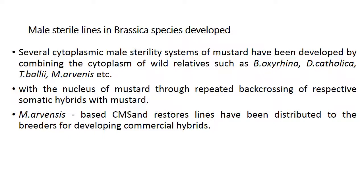Coming to male sterile lines in Brassica species: several cytoplasmic male sterility systems of mustard have been developed by combining the cytoplasm of wild relatives — Brassica oxyrrhina, Brassica catholica, Brassica balli, Brassica arvensis etc. The main sterility system is used for the production of hybrids in Brassica with a nucleus of mustard through repeated backcrossing of respective somatic hybrids with mustard. Brassica arvensis-based CMS and restorer lines have been distributed to breeders for developing commercial hybrids.